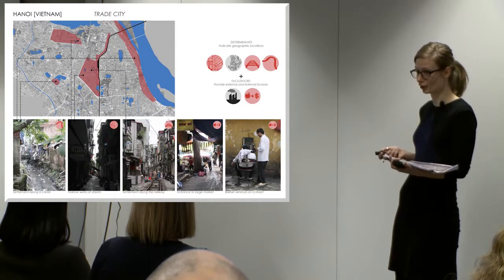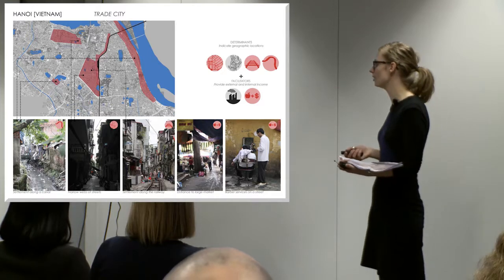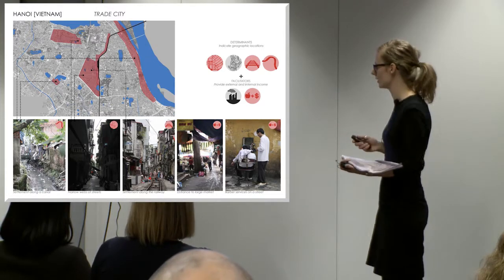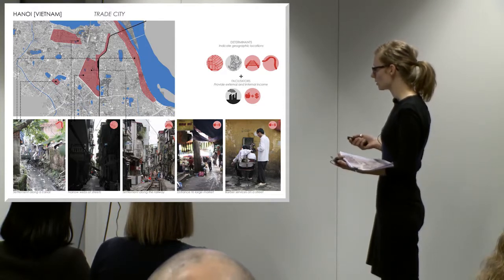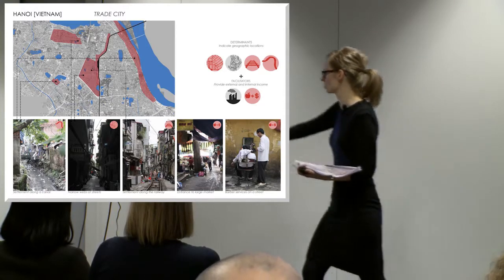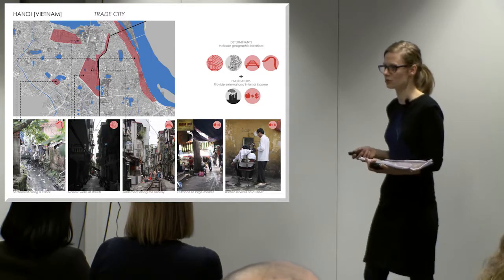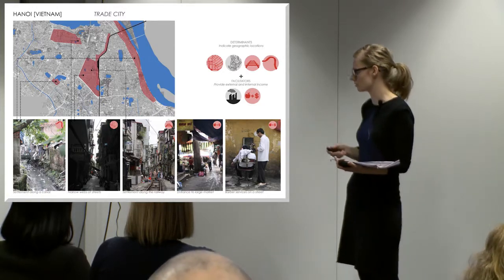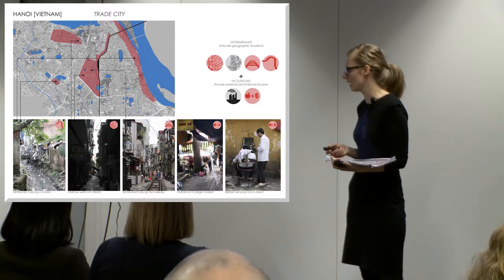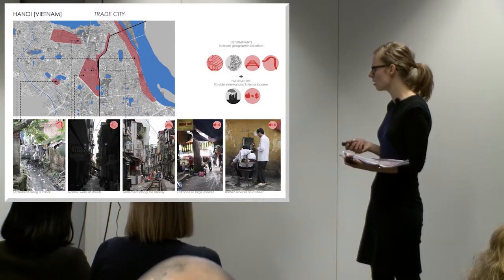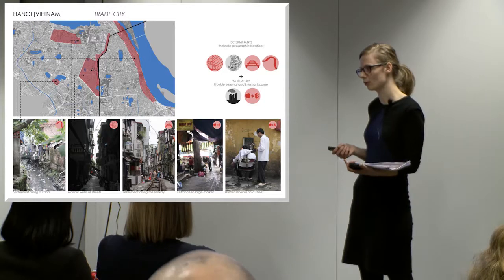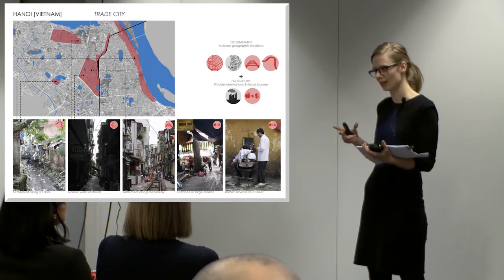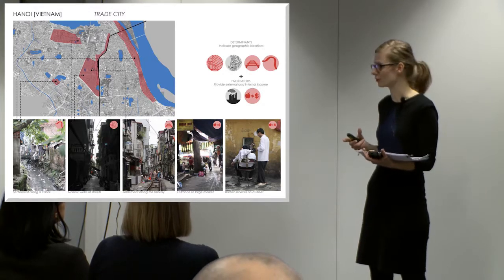My trip started in Hanoi, Vietnam, where the red areas mark the informal settlements in the city. Looking at the railway lines, quite a lot were covered with informal settlements, and the canals in the picture on the left also had informal settlements around them. What was very unique about Hanoi was that everything was organized in very dense labyrinths of dwellings and dark corridors.